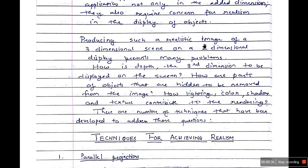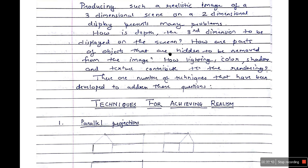Producing such a realistic image of a three-dimensional scene on a 2D display presents many problems. How is the depth, the third dimension, to be displayed on the screen? How are the parts of the objects that are hidden to be removed? How do lighting, color, shadows and texture contribute to the rendering? There are a number of techniques that have been developed to address these questions.